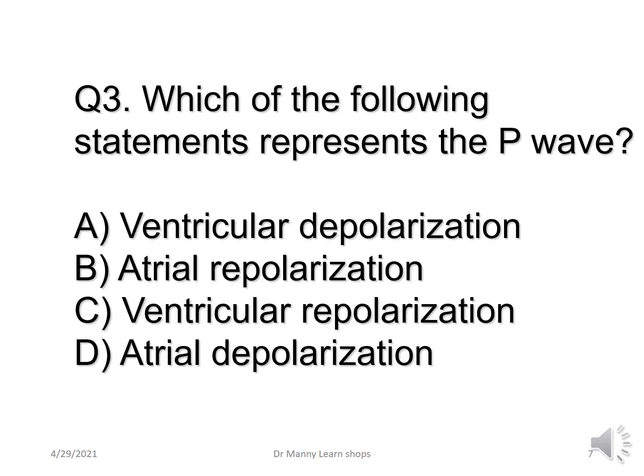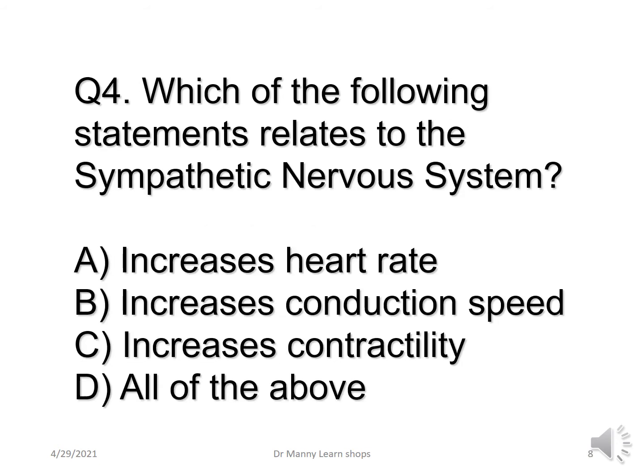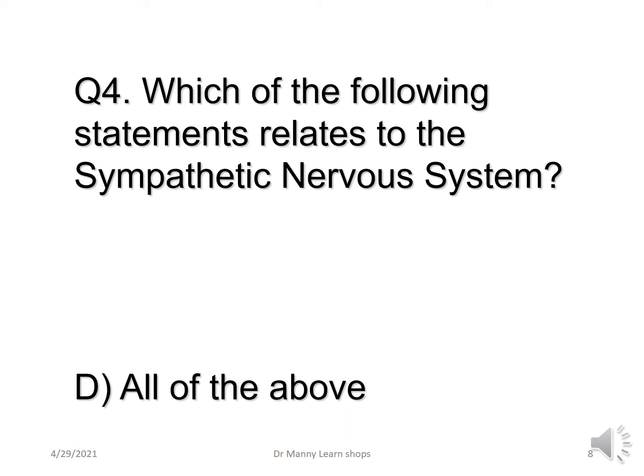Which of the following statements represents the P wave? The correct answer is atrial depolarisation — D. Which of the following is normal about the heart rate? The correct answer is D — all of the above.